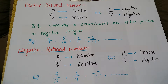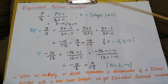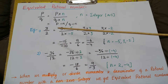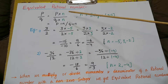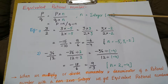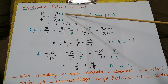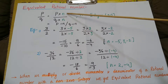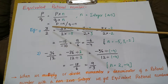Here numerator is negative and denominator is positive; here numerator is positive and denominator is negative; and here numerator is negative and denominator is positive. These are called negative rational numbers. Now I am going to tell about equivalent rational numbers. Equivalent rational numbers are like equivalent fractions — the numerator and denominator can be multiplied or divided by the same non-zero integer N.